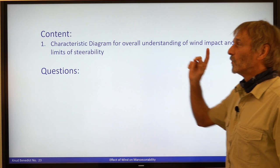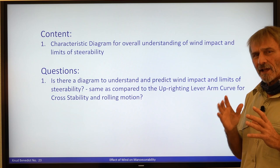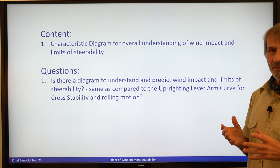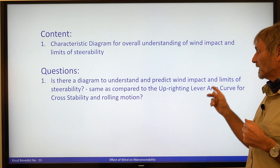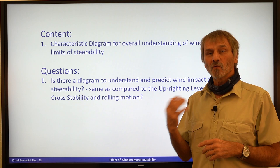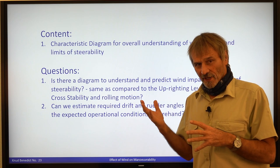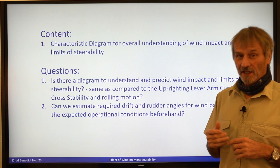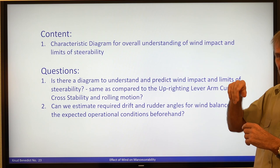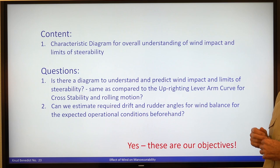Is there one diagram to understand and predict the wind impact and the limits of steerability — in the same way as we use the upright lever arm curves, the graphs required to estimate the ship's cross stability for loading conditions? And if we have such a diagram, can we estimate the required drift angle or rudder angle for the wind balance on a straight track or in maneuvering motion beforehand? Yes, we can — these are our objectives.